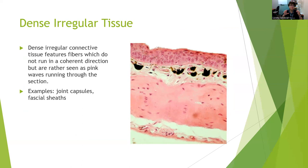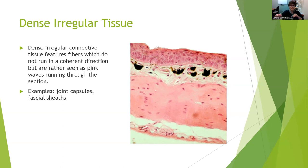Dense irregular connective tissue features fibers which don't run in a coherent direction. The types of tissues made up of dense irregular connective tissue include joint capsules, aponeuroses, the periosteum, the dermis of the skin, and fascial sheets. The connective tissue is arranged in a dense but multidirectional fashion, so forces are resisted in a multidirectional, three-dimensional way. Dense irregular connective tissue has slightly greater concentration of ground substance and slightly improved vascularity over dense regular connective tissue, making it a little more flexible and able to move in a multidirectional, three-dimensional way.